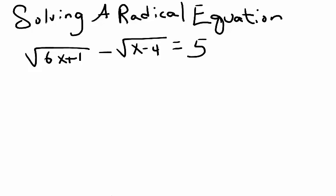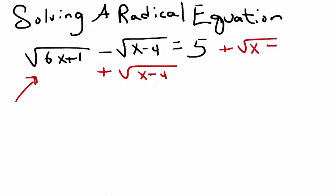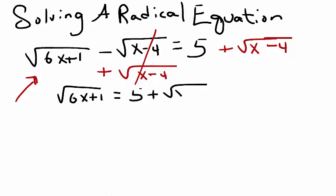The first thing I want to do is isolate the more complicated radical expression on one side. The square root of 6x plus 1 looks like the more complicated expression. Therefore, I'm going to add the square root of x minus 4 to both sides, so that the square root of 6x plus 1 is all by itself on one side. Now I have the square root of 6x plus 1 equals 5 plus the square root of x minus 4.